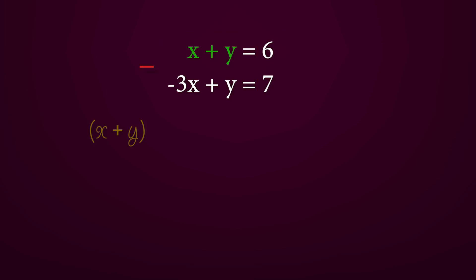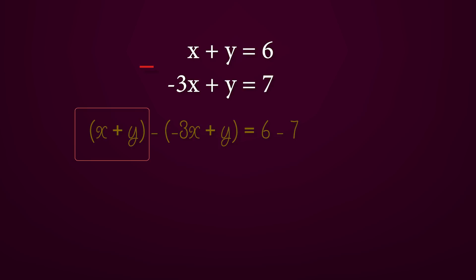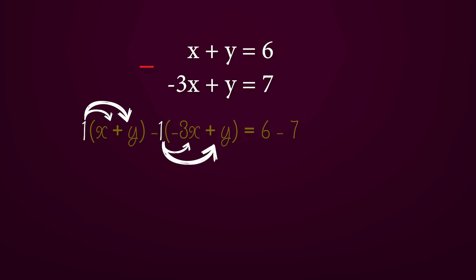For example, if we were to subtract these two equations, we subtract the left-hand sides together and the right-hand sides together. So we get the left-hand side of the first equation, which is x plus y, minus — since we are subtracting — minus 3x plus y, which is the left-hand side of the second equation. This will be equal to 6 minus 7. Then we expand our brackets; remember that the term outside the bracket is multiplying by everything inside the bracket.